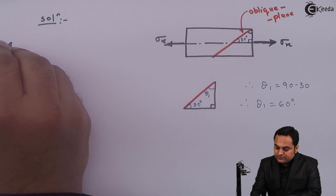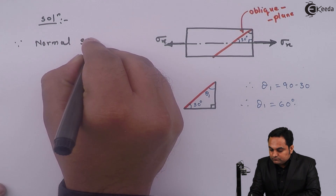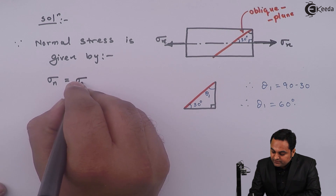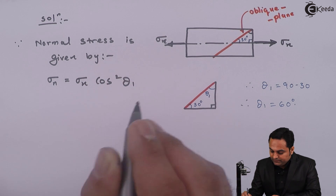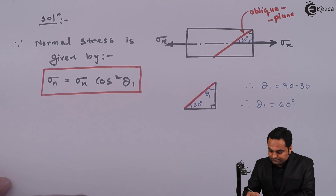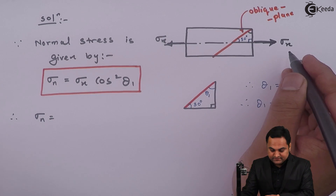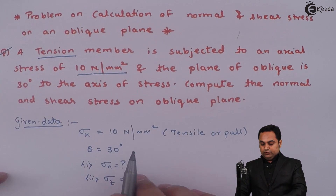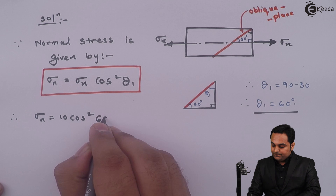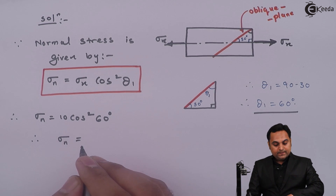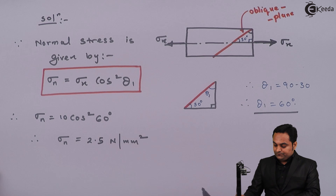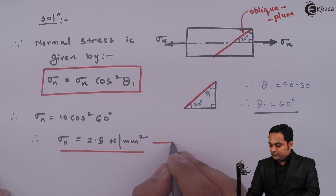After getting theta₁, we can directly use the formula for normal stress. Normal stress is given by: σₙ = σₓ · cos²θ₁. Putting in the values, σₓ is 10 N/mm² and cos²(60°), the value of normal stress comes out to be 2.5 Newton per mm square. This is the first answer.